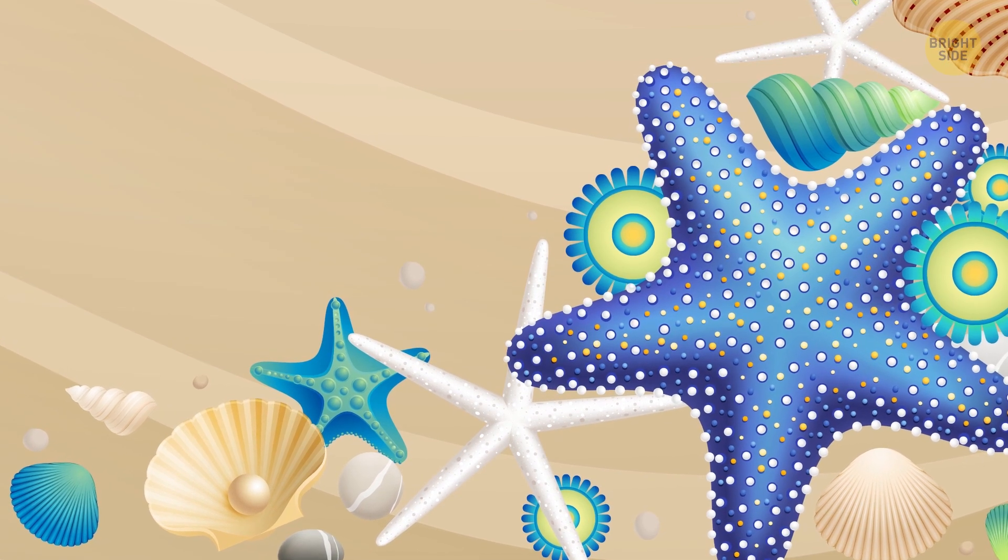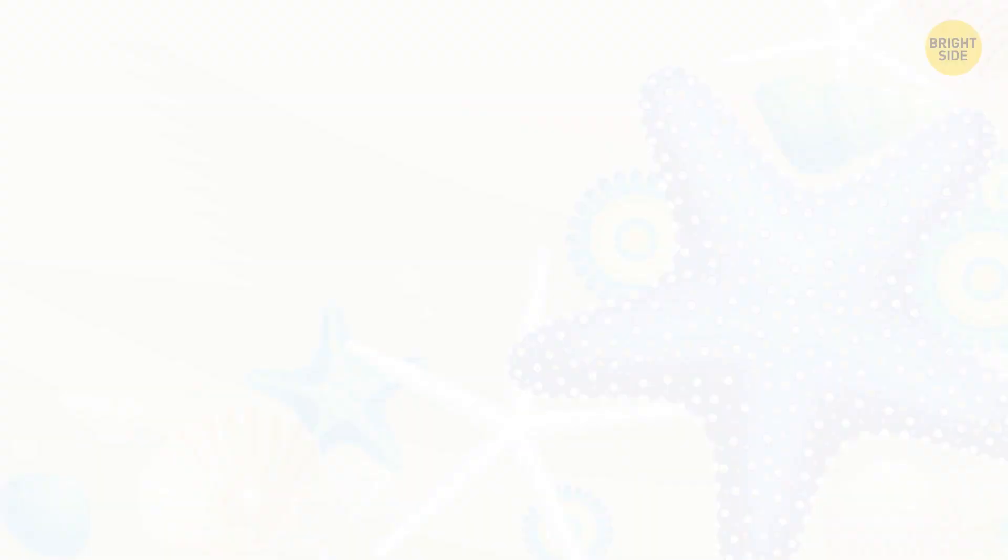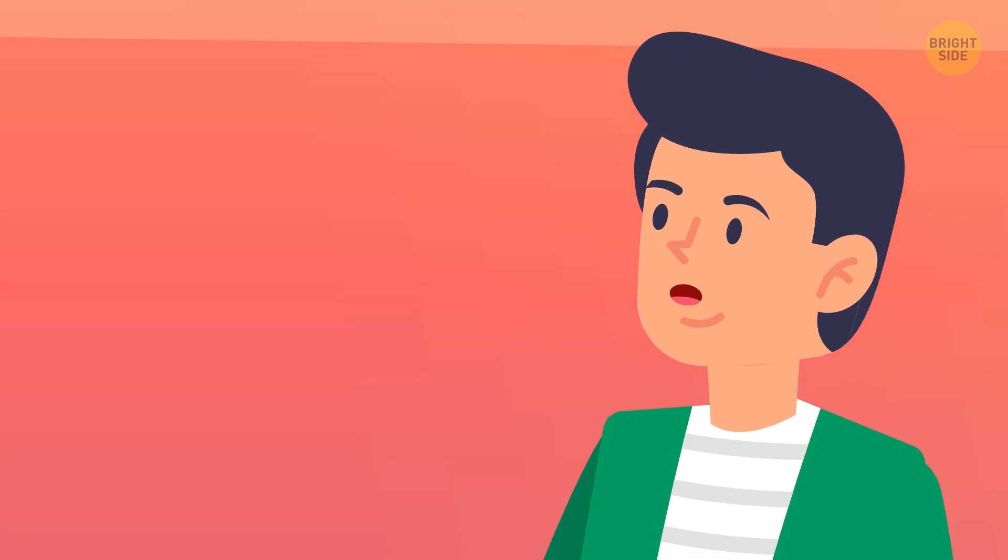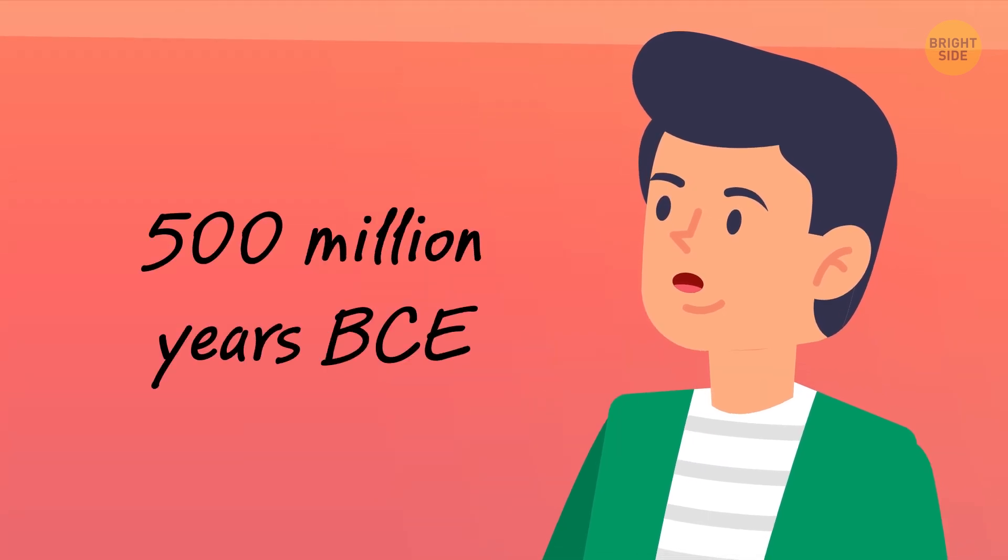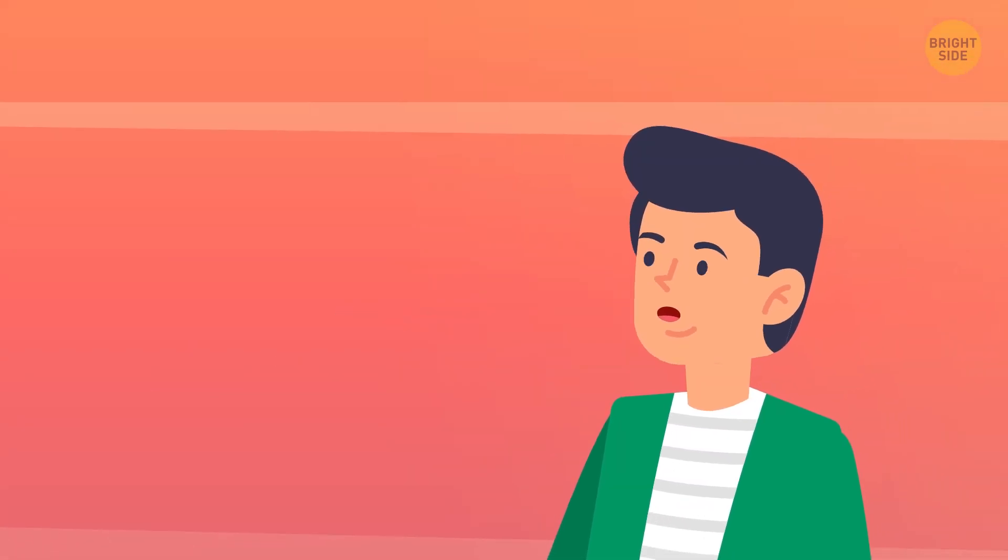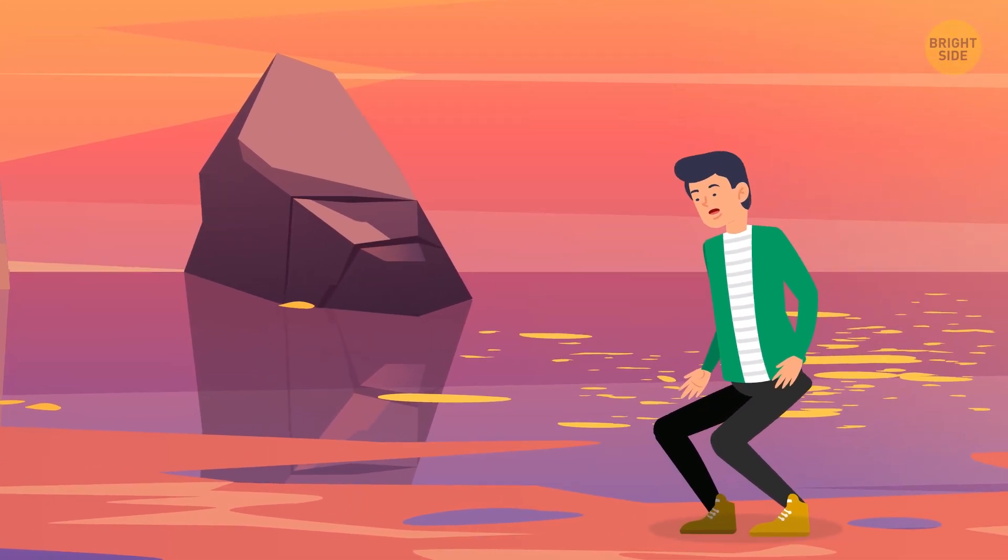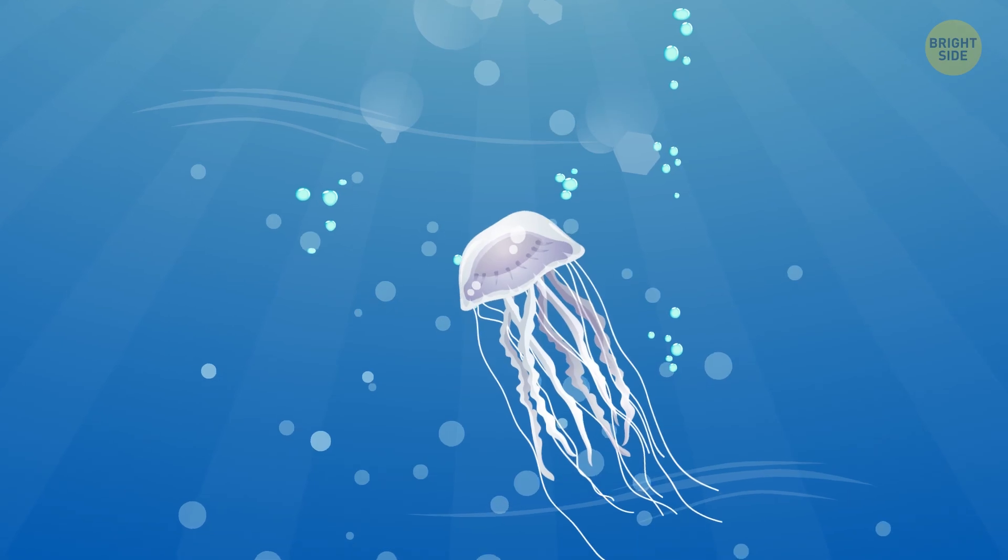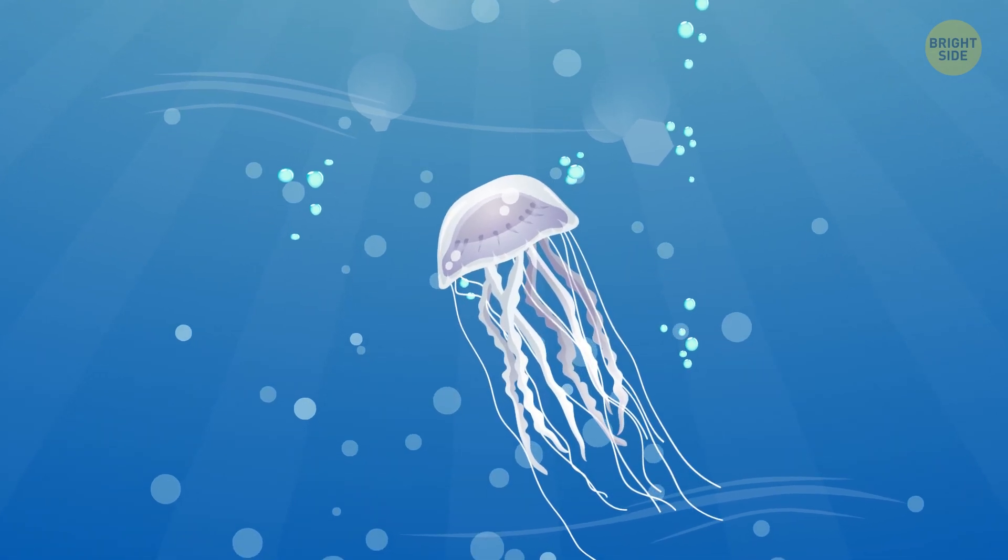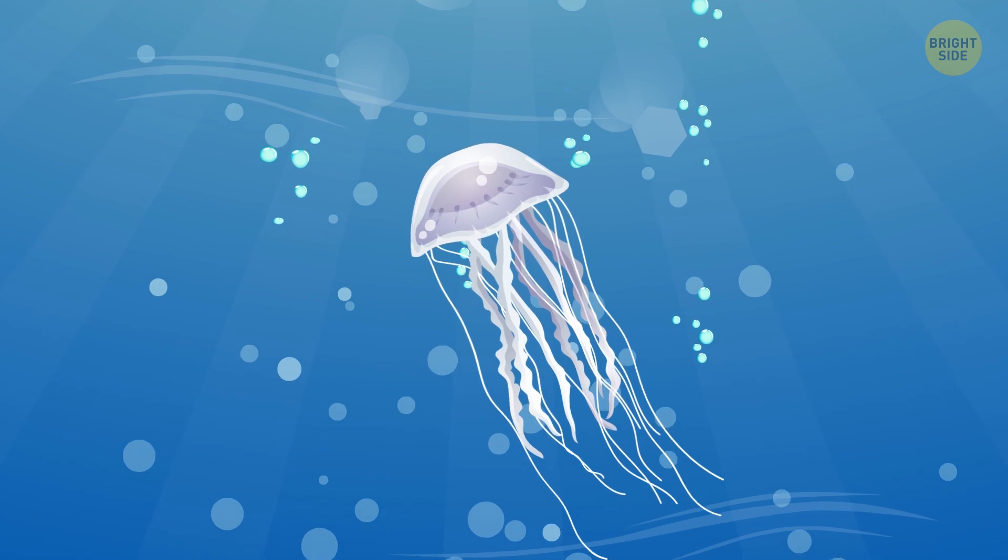The time capsule brings Sam 500 million years BCE. He seems to be still at the same body of water. As he crouches down, he notices a semi-transparent creature. It has tentacles and a distinct bell shape. It's one of the first jellyfish.